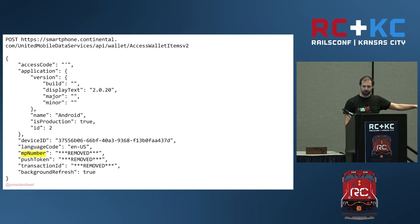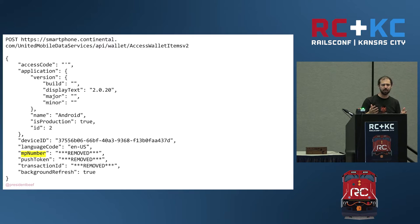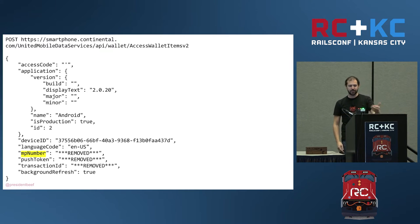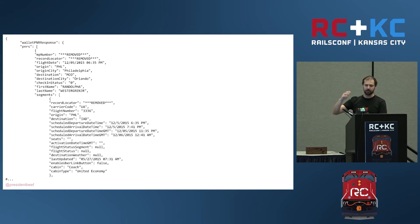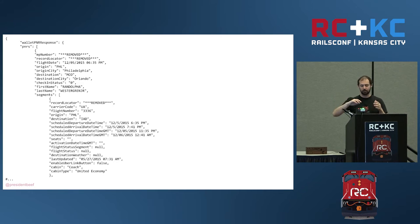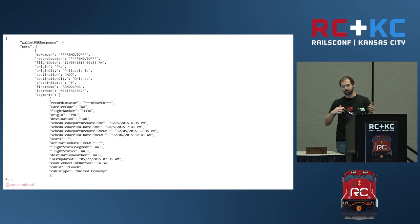He noticed in the request there's an MP number — a Mileage Plus number. He thought, that's kind of like my user ID. What if I change that to someone else's number? What would I get back? He got back a whole bunch of information, including what flight they're on or booked for, their name, where they're going, whether it's late, when it's coming and going — every leg of the trip, and a whole bunch more.